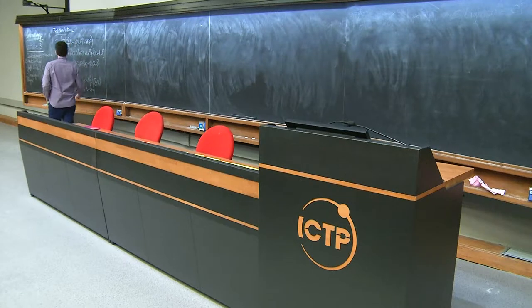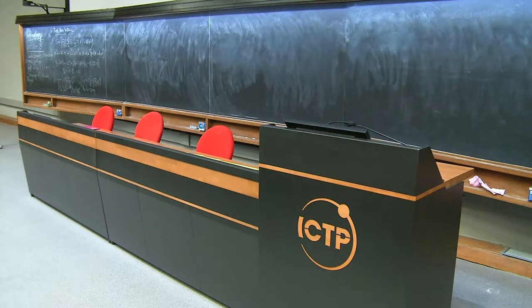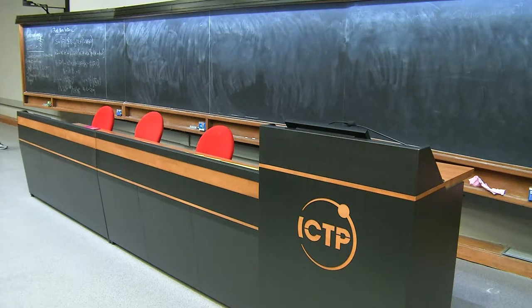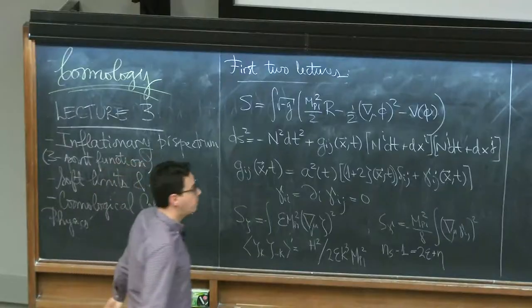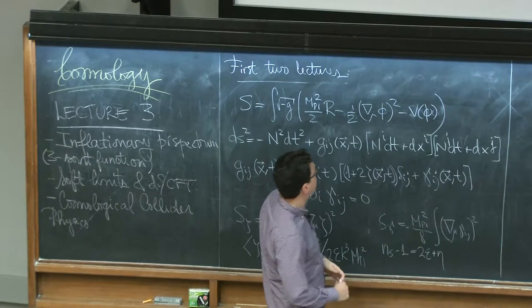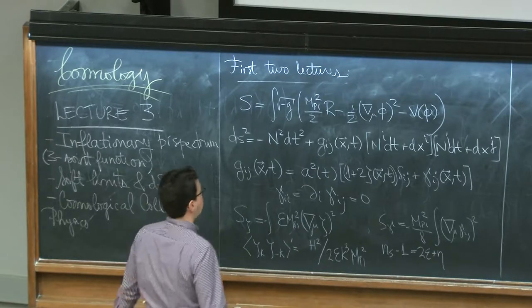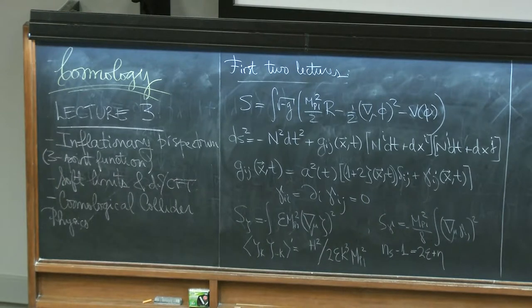So, a brief recap. The inflationary Lagrangian we've been studying is probably the most vanilla model of inflation — just single-field inflation with a potential that I require generates the inflationary solution, which is a background that roughly looks like de Sitter space, and for which the slow-roll parameters are small enough that I can use the slow-roll approximation and use the de Sitter mode functions to describe particle production.